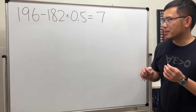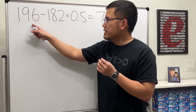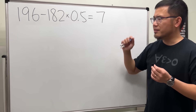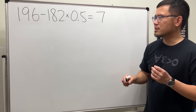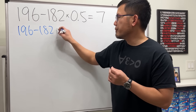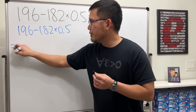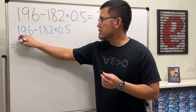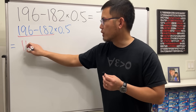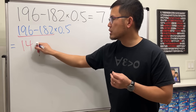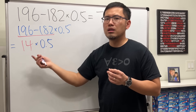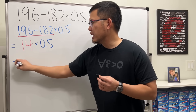Now let's go over what's happening here. We have 196 minus 182 times 0.5, and it says the answer is equal to 7. How is this possible? Well, if you just go left to right: 196 minus 182 gives you 14, then multiply by 0.5 — take half of that — half of 14 is 7.